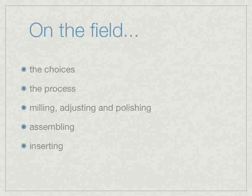Once we've figured out all the important components pre-game — all the parts we need and who does what — we're going to have some choices to make when our patient is actually there. Do we want to fabricate a cement-retained prosthesis — a hybrid abutment with a separate crown that will be cemented? Or do we want to fabricate a one-piece hybrid abutment crown that will be screwed into our patient's mouth? Once we've figured out those choices, we need to deal with milling, adjusting, polishing, assembling these pieces together, and then inserting them.